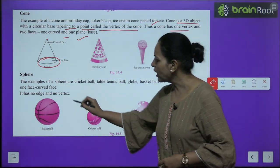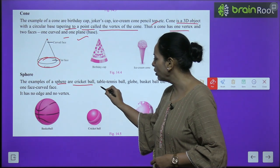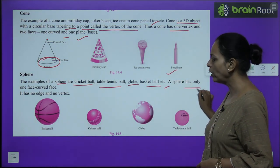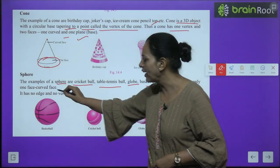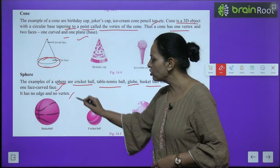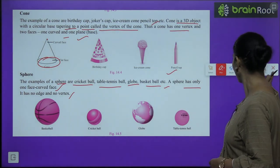Sphere: The examples of a sphere are cricket ball, table tennis ball, globe, basketball, etc. A sphere has only 1 face that is a curved face. It has no edge and no vertex.